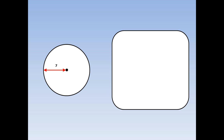We're going to find the circumference of this circle with radius 7. First, I'll write out the formula: circumference equals 2 pi r, which means 2 times pi times the radius. Pi is 3.14 and the radius is 7. Our final answer is that the circumference of the circle is 43.96 centimetres.